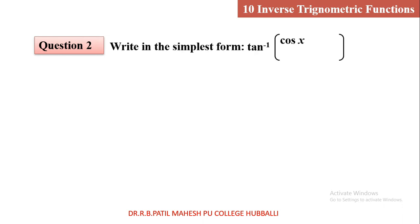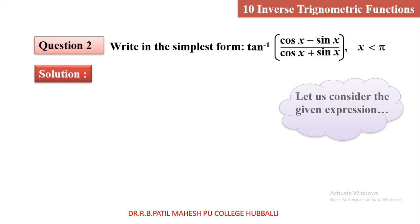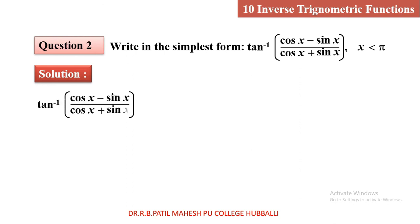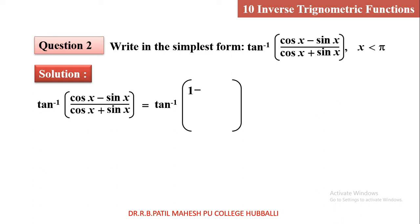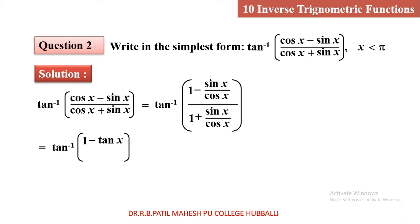For question 2: write the simplest form of tan inverse of (cos x minus sin x) upon (cos x plus sin x). Consider the expression tan inverse of (cos x minus sin x) upon (cos x plus sin x). Divide both numerator and denominator by cos x. So you get tan inverse of (1 minus sin x/cos x) upon (1 plus sin x/cos x). Since sin x by cos x is tan x, this gives 1 minus tan x in the numerator divided by 1 plus tan x in the denominator.